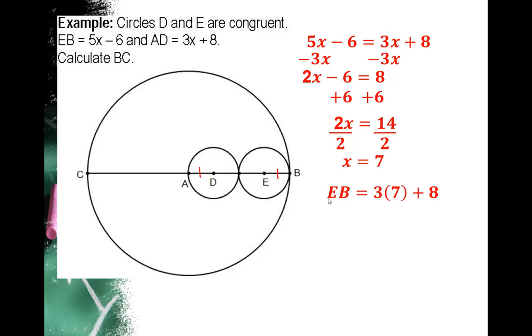So I'll go ahead and calculate the length of EB, or actually AD. Actually it doesn't matter, it could be EB or AD. Let me go ahead and fix that, just because technically that is AD that I plugged into. So anyways, I'm calculating the length of AD which is 3 times 7 plus 8. So I'm going to get 21 plus 8, or 29. So I can put 29 on EB, AD, and all of those congruent radii.